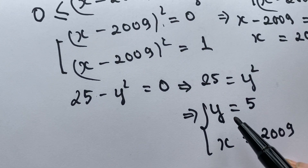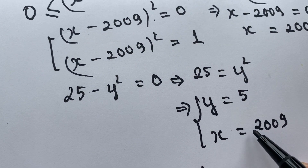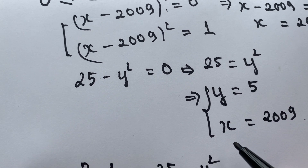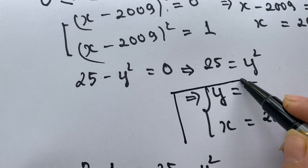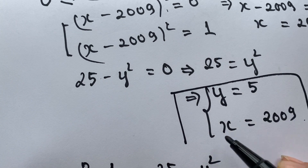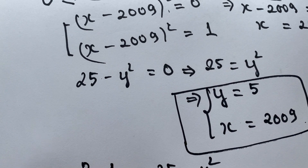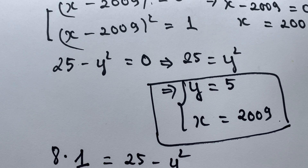So we just have the values x equals 2009 and y equals 5. That is the answer to the equation. Thank you for watching my video. Don't forget to subscribe to my channel. Bye-bye!